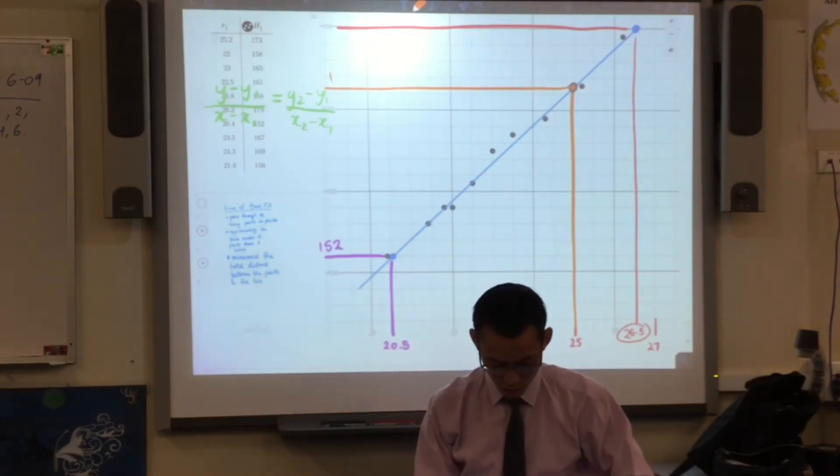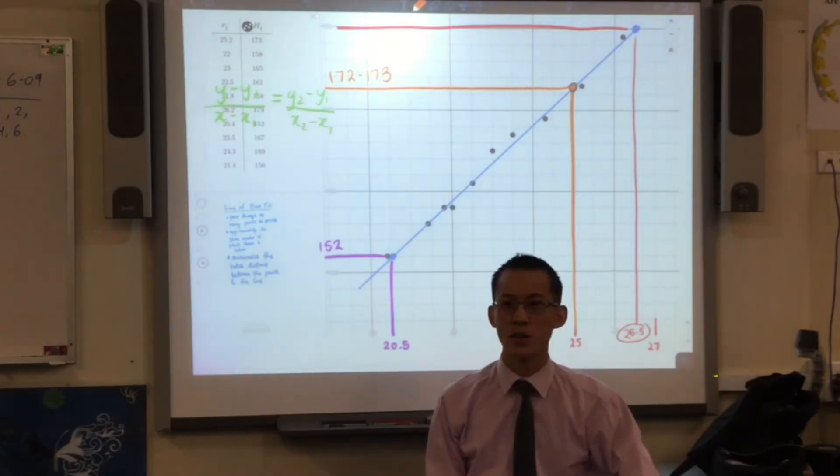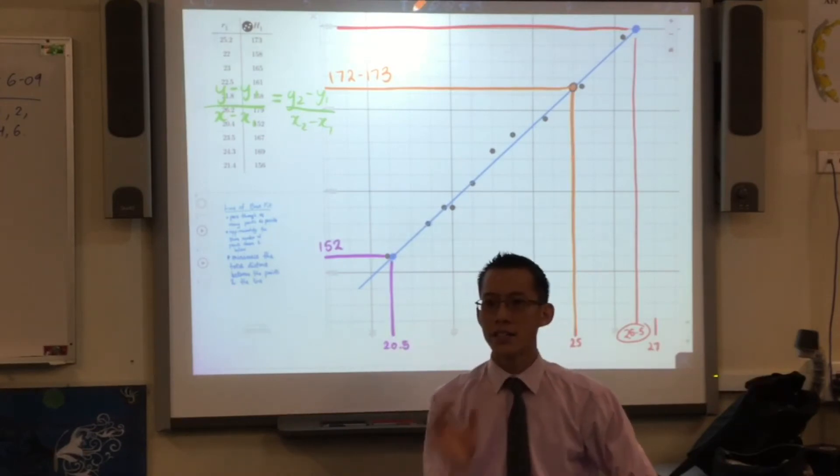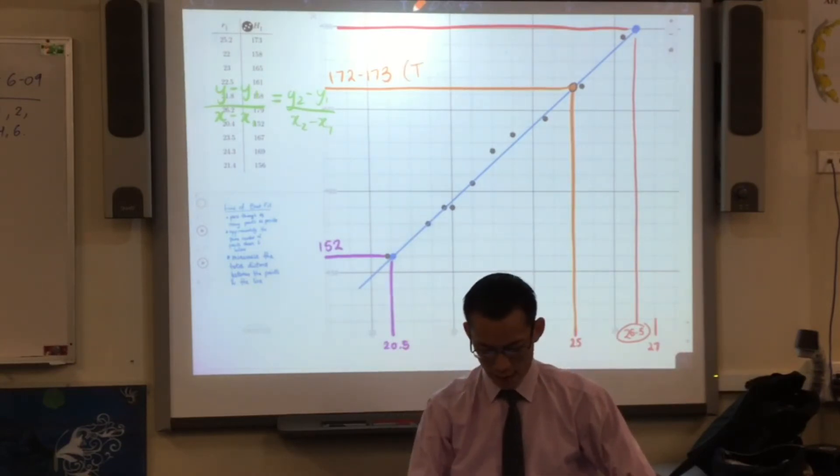What do you read that as? 173, 172-ish. I'm happy with either of those. Because remember, this is a line of best fit that you've done by eye. Now, this is a really important bit. Can you just look up? This process that we've just done has a name. It's called, and I'd love you to write it down, it's called interpolation.